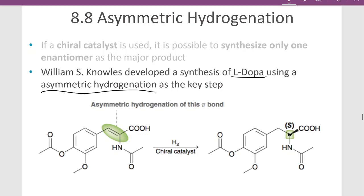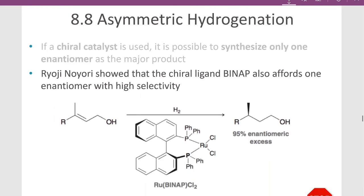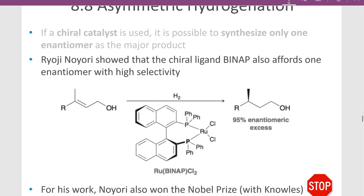We're still adding hydrogen across that double bond, but we're going to add to one side of the double bond preferentially because of using this chiral catalyst. In this case, a chiral ligand — BINAP — also gives you one enantiomer over the other. This hydrogenation gives a 95% enantiomeric excess of this particular enantiomer of the molecule. So if you use a chiral catalyst, you can preferentially create one enantiomer over the other through this hydrogenation process.